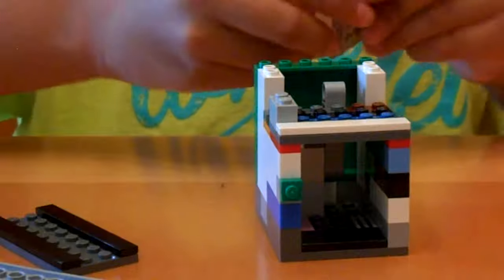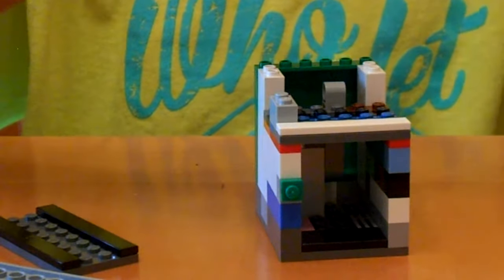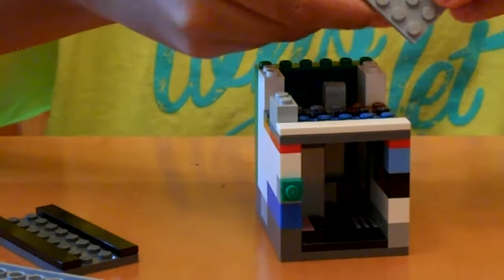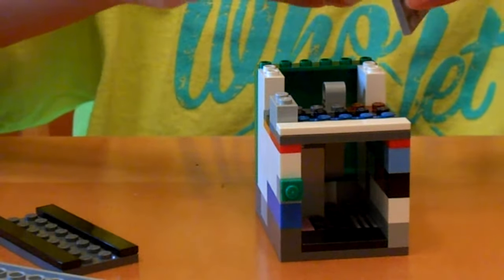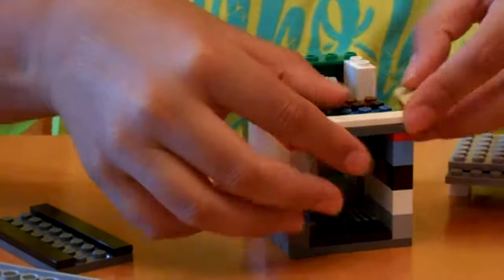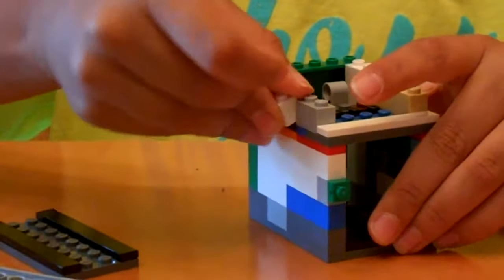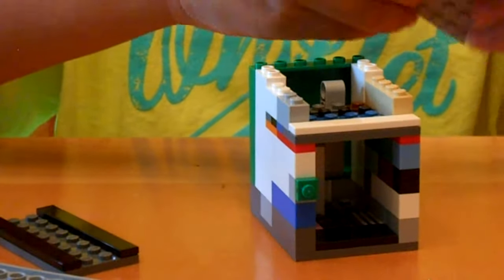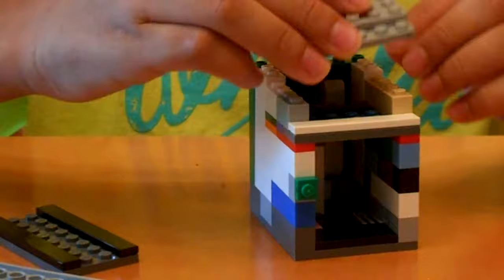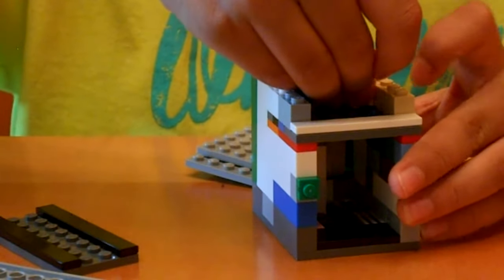And now we want to do the cover. So the cover is complex. Take a 1x4, place it on the side. 1x2, place it on the side. A 1x1 for the code. It's going to go right there.